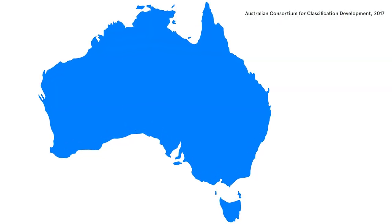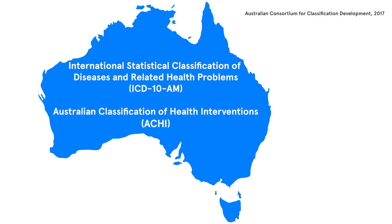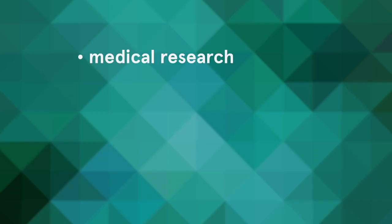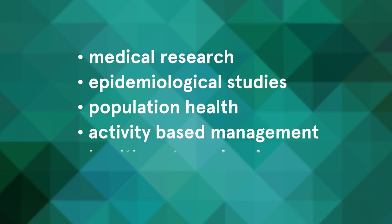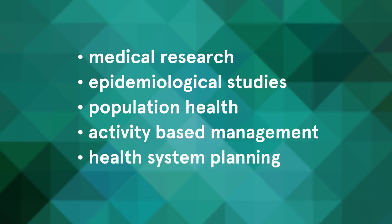Australia uses the International Statistical Classification of Diseases and Related Health Problems and the Australian Classification of Health Interventions to classify data of admitted patients. This data is used in medical research, epidemiological studies, population health, activity-based management and health system planning. Clinical classification is a detailed process performed by qualified clinical coders.